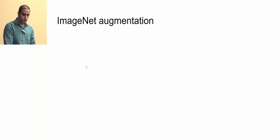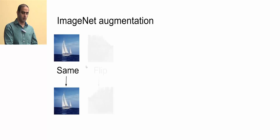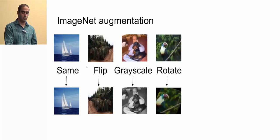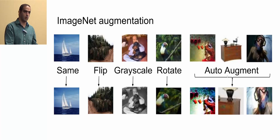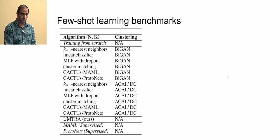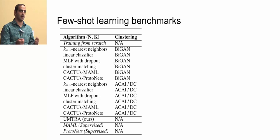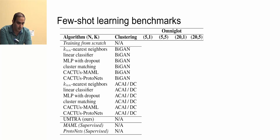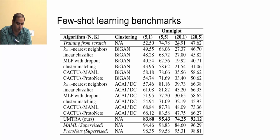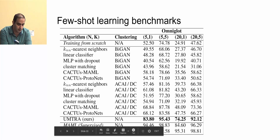For Mini ImageNet augmentation we can use flip, grayscale, rotation, combinations of these, or Auto-Augment policy. We compare UMTRA against different clustering algorithms followed by a classifier applied on top of few available examples. On Omniglot, UMTRA is evaluated on five-way one-shot, five-way five-shot, 20-way one-shot, and 20-way five-shot settings, and works very well, coming very close to supervised learning algorithms.